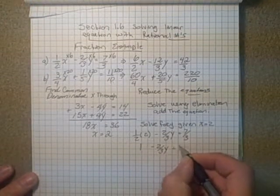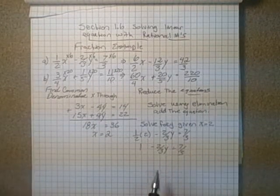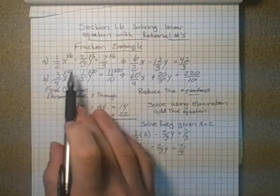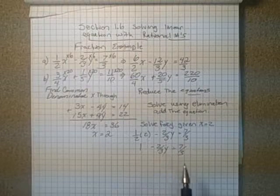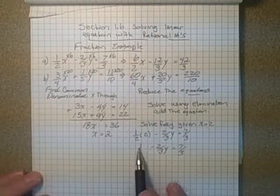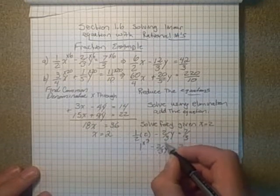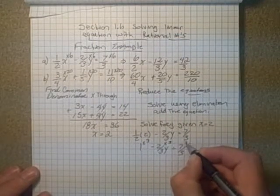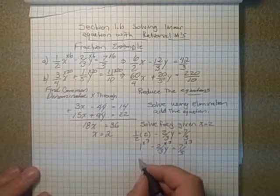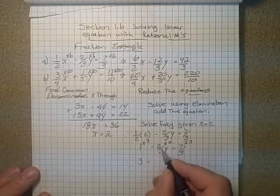So let's eliminate, do the same kind of thing we did up here. Eliminate the denominator by, common, this one would be like 1 over 1, so the common denominator would be 3. So multiply everything by 3.